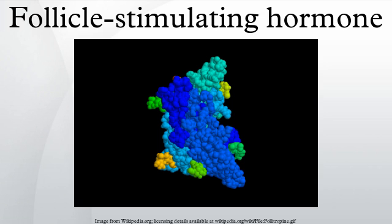The alpha subunits of LH, FSH, TSH, and HCG are identical and contain 92 amino acids. The beta subunits vary. FSH has a beta subunit of 111 amino acids, which confers its specific biologic action and is responsible for interaction with the FSH receptor.